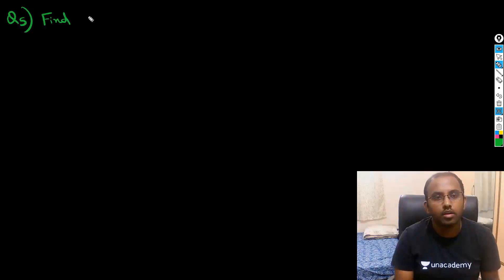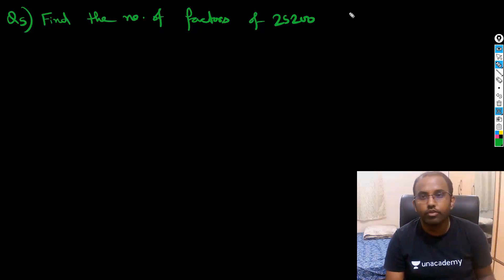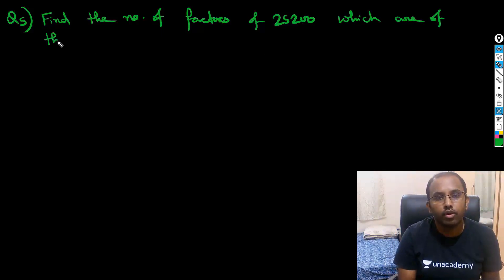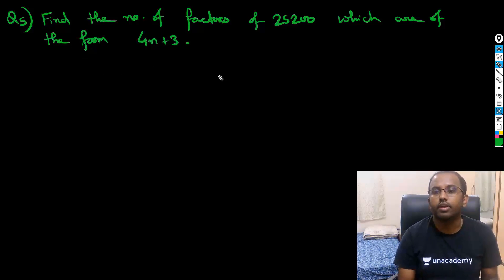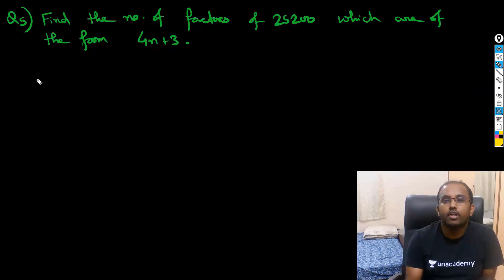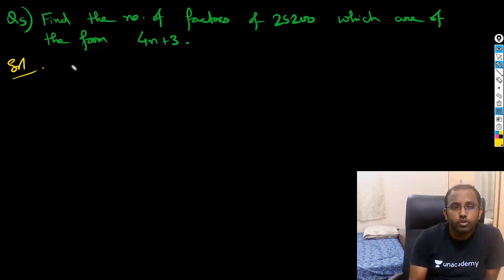Question 5 says: find the number of factors of 25,200 which are of the form 4n plus 3. Once you observe this question, you need to find the value of factors of 25,200 which are of the form 4n plus 3. How to solve such questions?